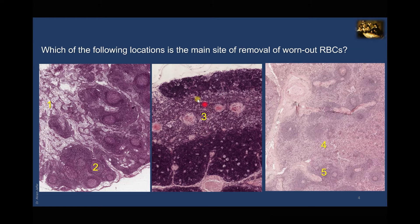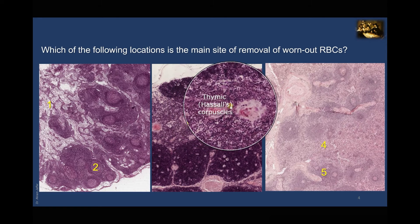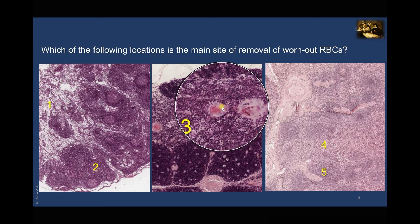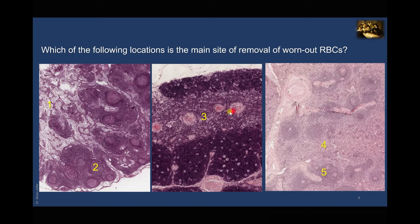The middle slide shows another encapsulated lymphoid organ with a darkly staining packed cortex and a lighter-staining medulla. The medulla shows a particular feature of the thymus: thymic Hassall's corpuscles, which are concentrically laminated structures. These laminated corpuscles represent masses of degenerating epithelial cells that incorporate macrophages containing debris from degenerate cortical lymphocytes. This confirms that area three belongs to the thymus and is not related to the removal of worn-out RBCs.